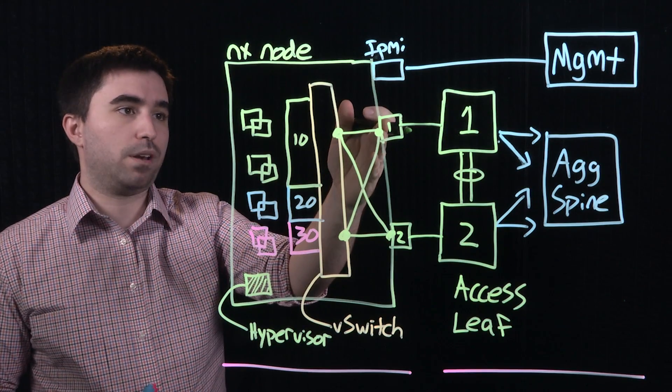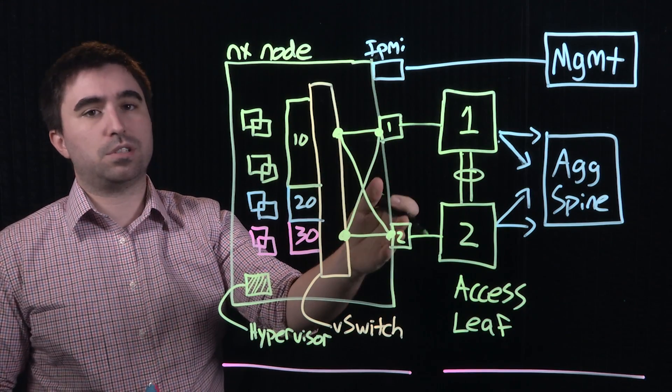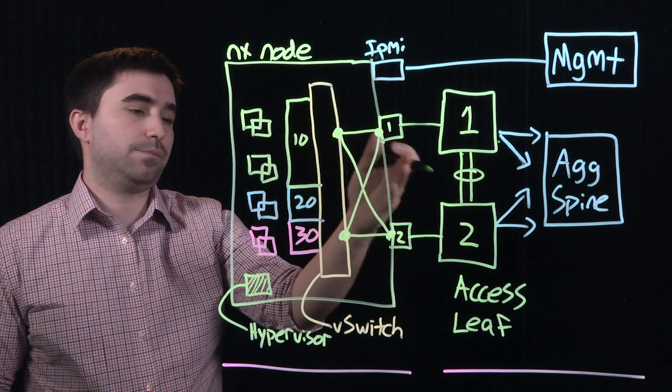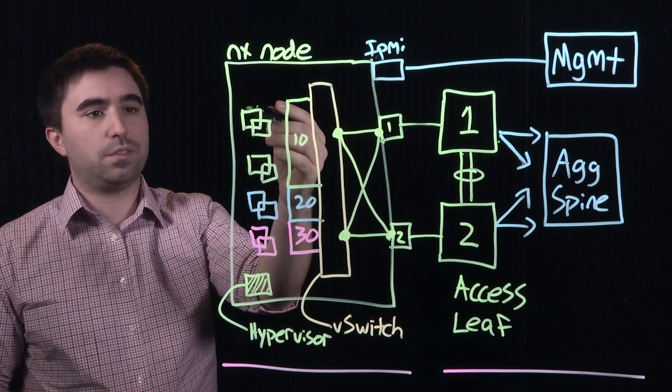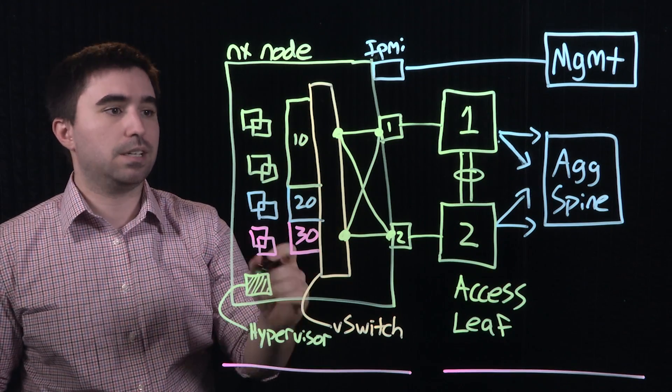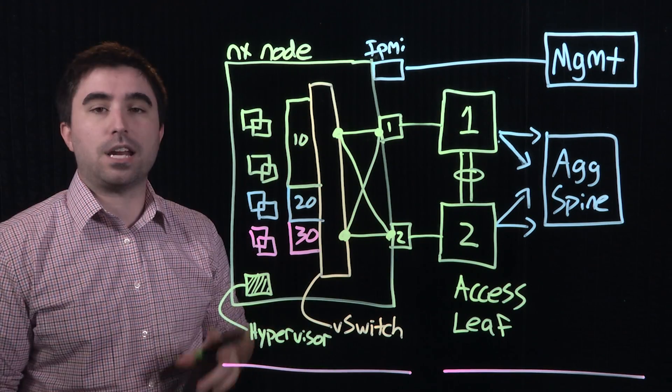So if link one fails, you'd have a reverse or gratuitous ARP go out of link number two to notify the upstream network that all of these virtual machines are now active on network link two. In option number two, configurations required on both sides of this diagram.